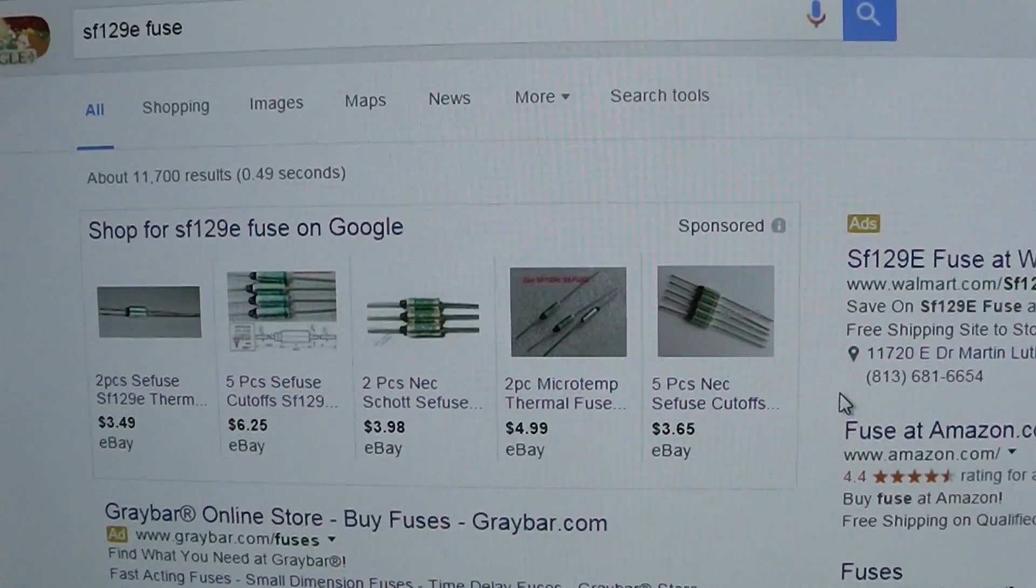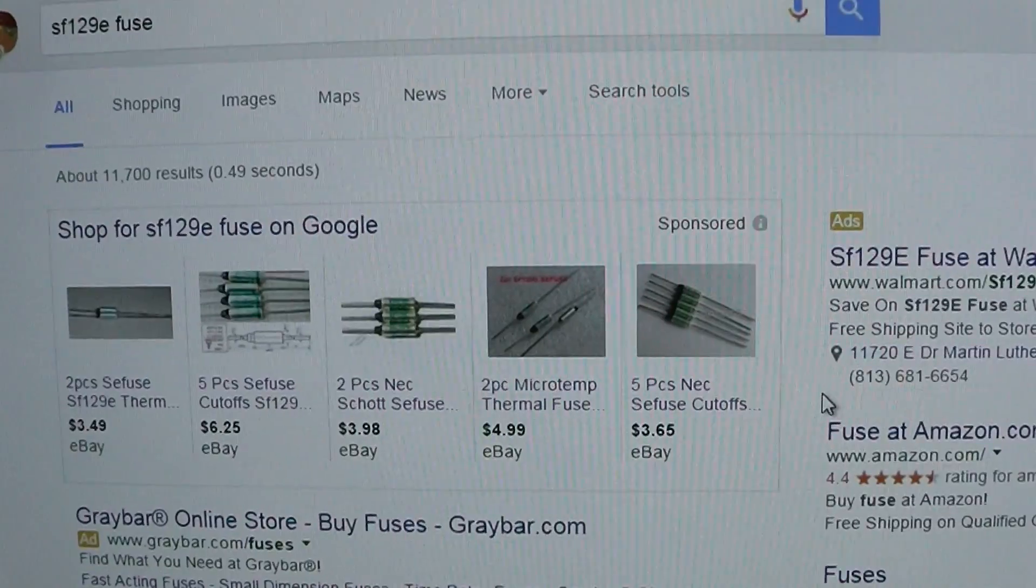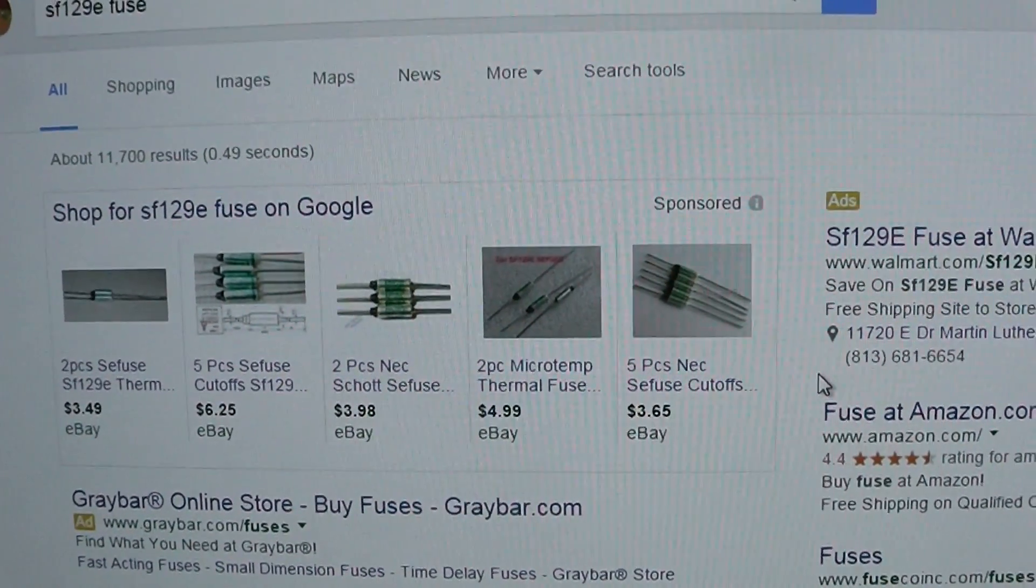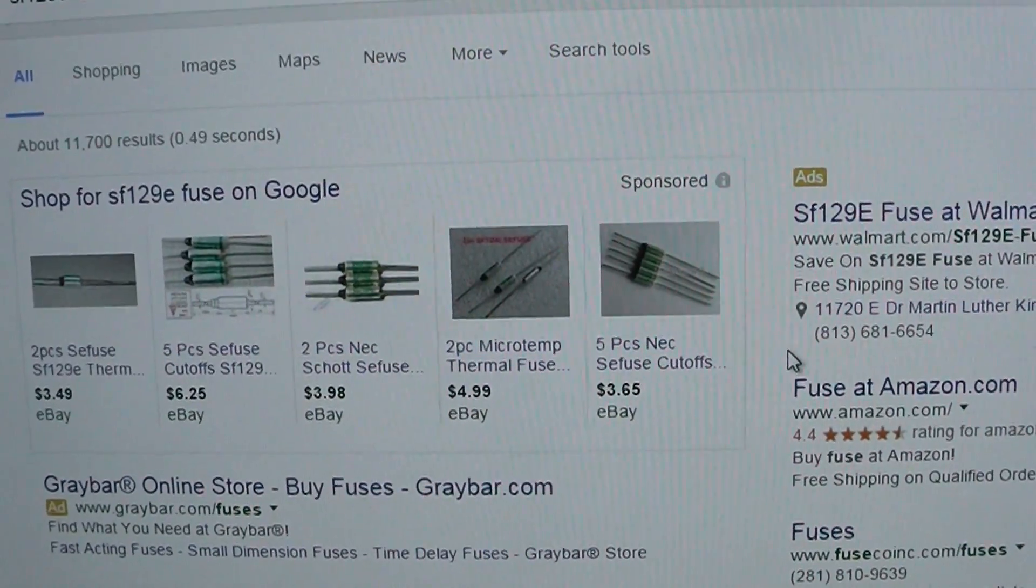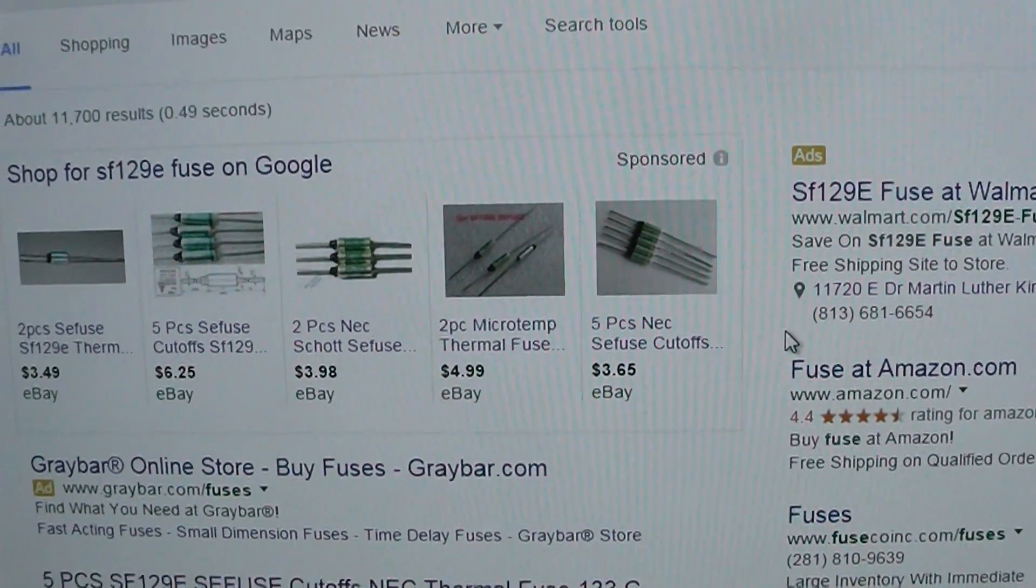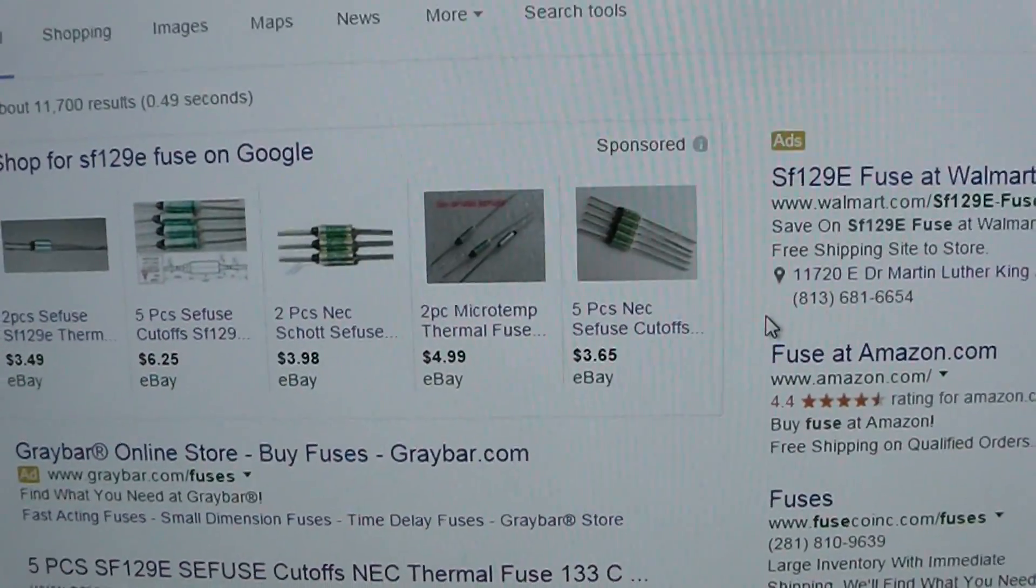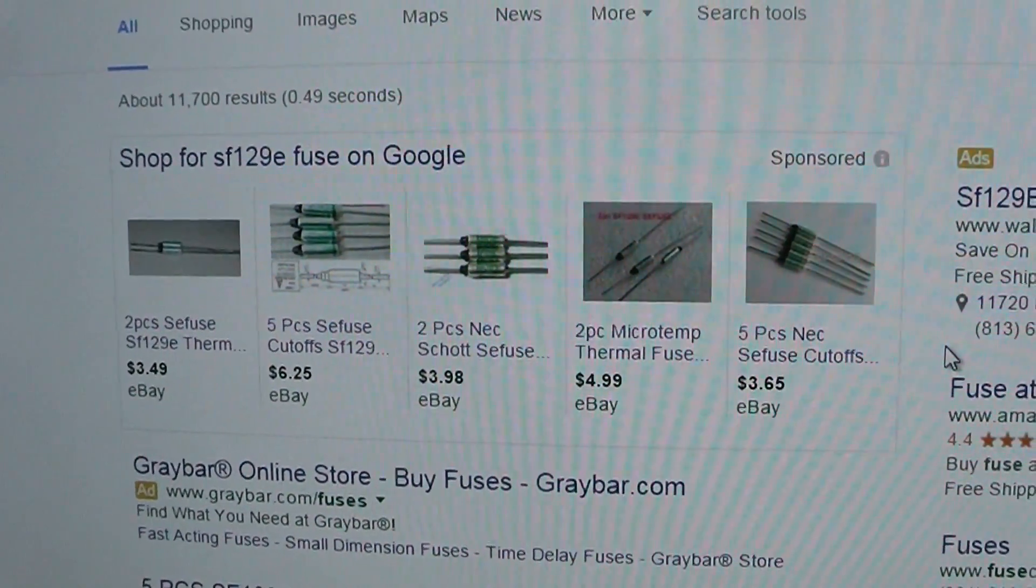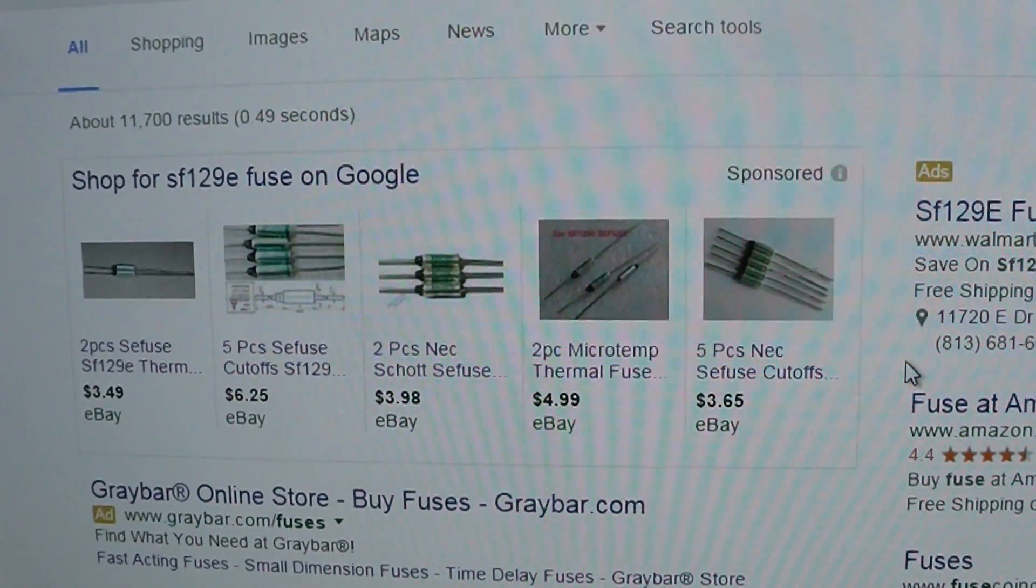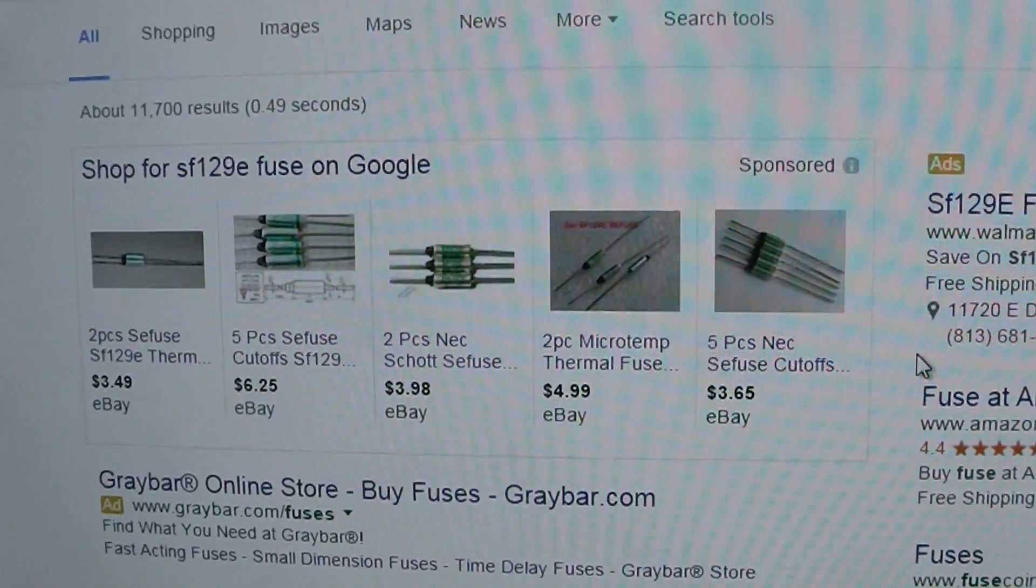Okay, I just typed in the fuse and this is what came up right here. So I'm probably going to get a pack of five because if I get one it'll break or it won't be good. If I get two I'll probably break both of them. If I have five then I'll have a couple extra. Alright, well let me get them ordered and I guess through the magic of YouTube, I'll be back in just a second and show you how to put it in.